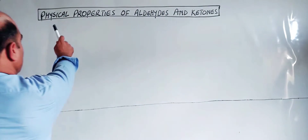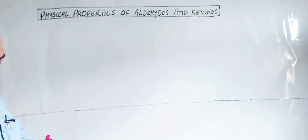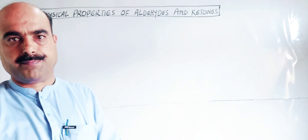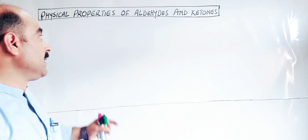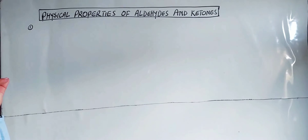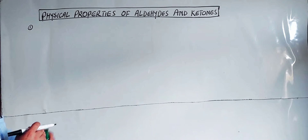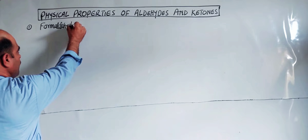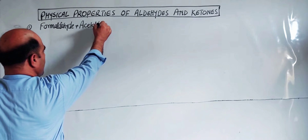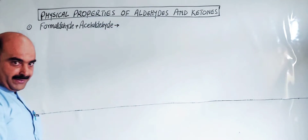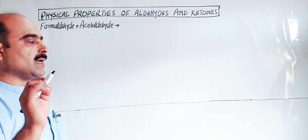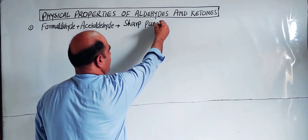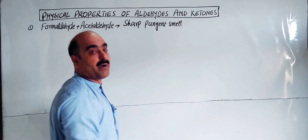Physical properties of aldehydes and ketones include color, odor, taste, solubility, conductivity, and so on. The first physical property is smell or odor. Formaldehyde and acetaldehyde — the first two members of aldehyde, with one and two carbons respectively — have a very sharp, pungent, repulsive smell.